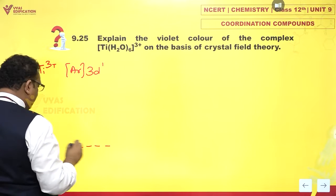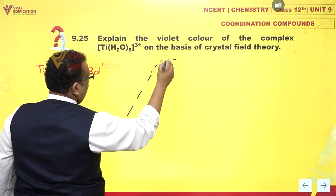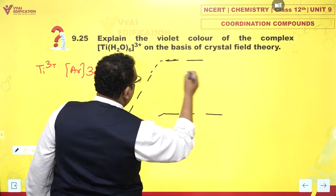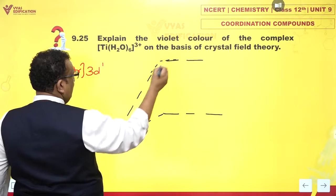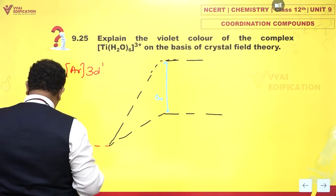If you look at the crystal field splitting in the case of titanium, you have some value of delta O. And you have one electron here.